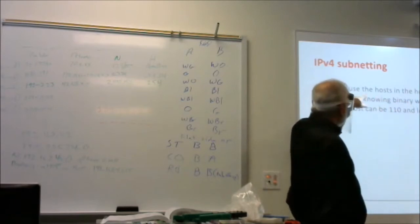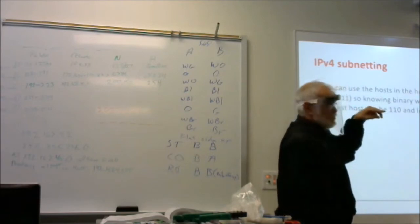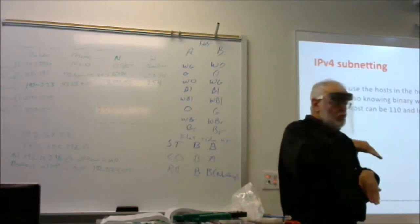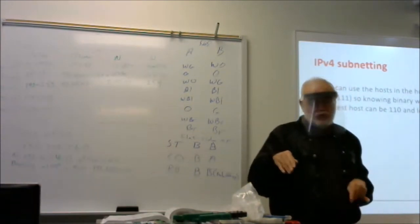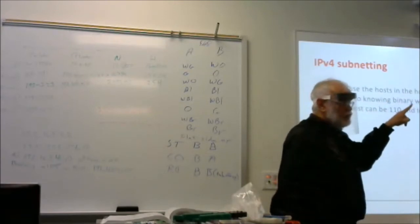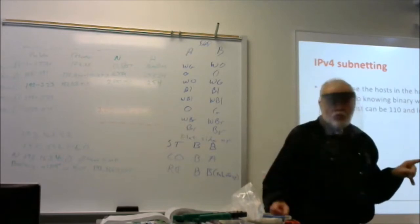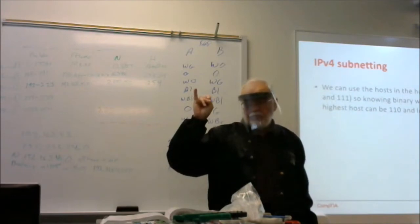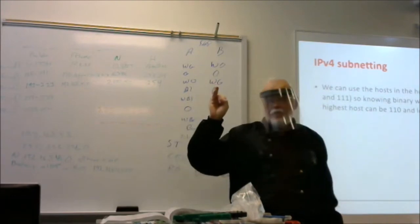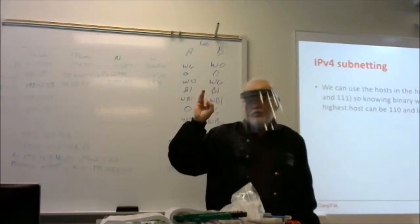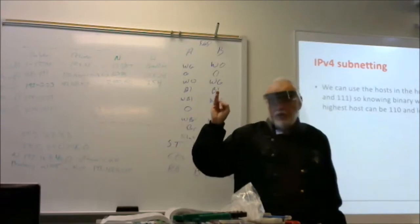In the host portion, we can use anything that's not all zeros and not all ones. All zeros in the host portion is the network address; all ones in the host portion is the broadcast address. So with four host bits, the largest usable value is 1110 in binary. If it's four bits and we take off one binary one, three ones followed by a zero — the lowest usable address is one in the host portion, which is 0001.